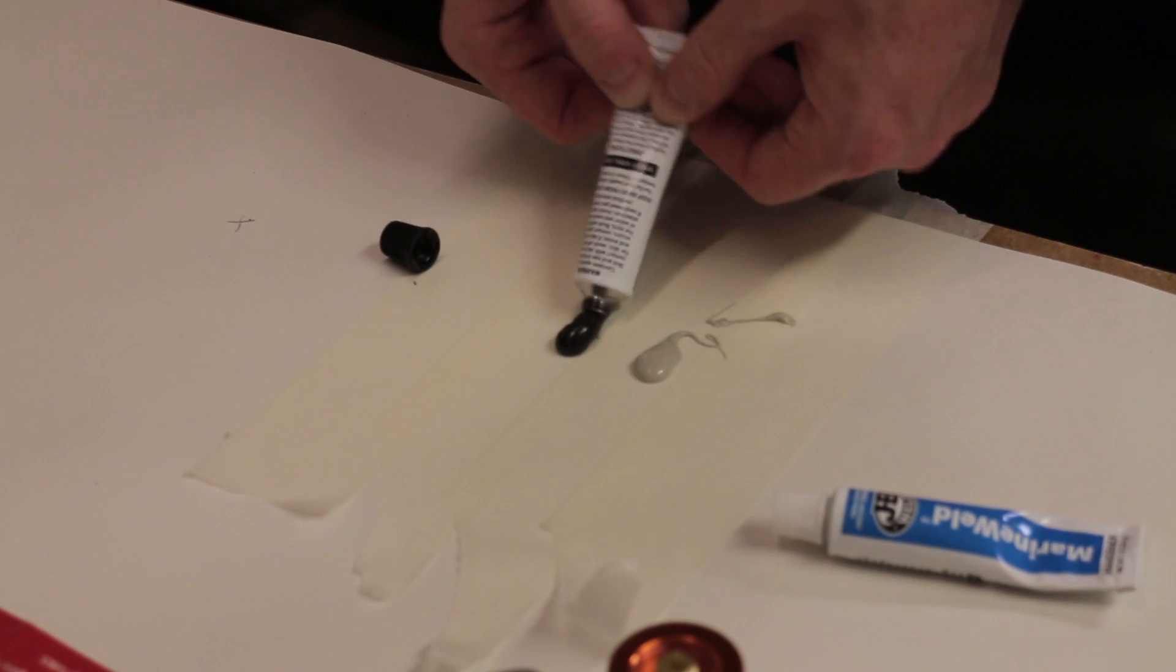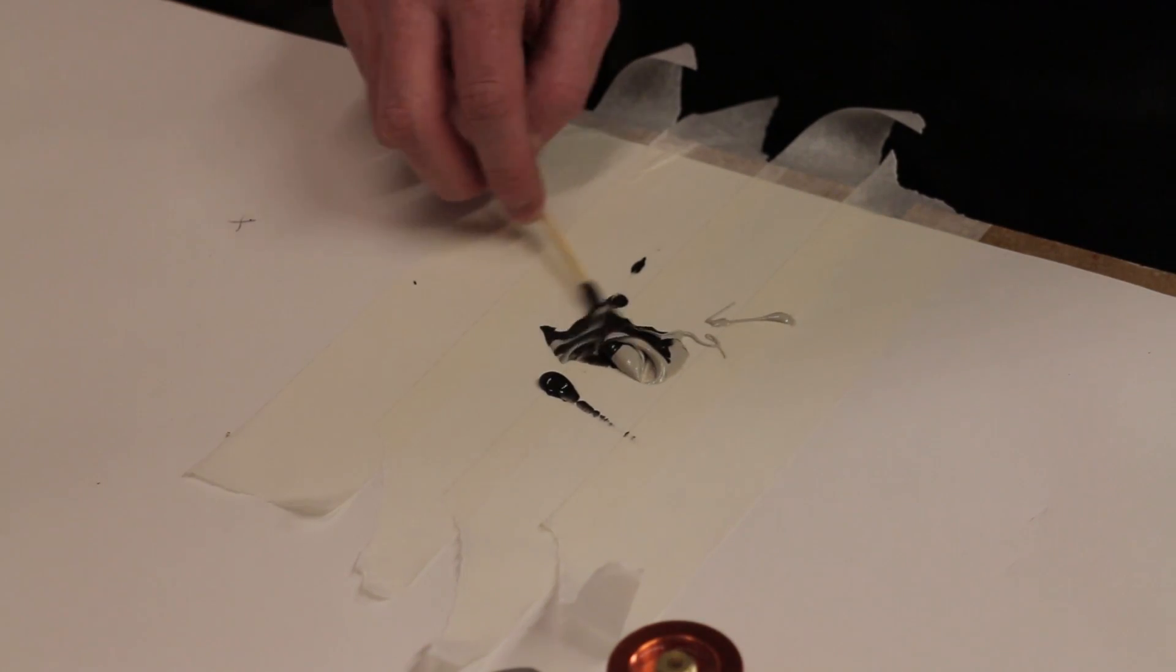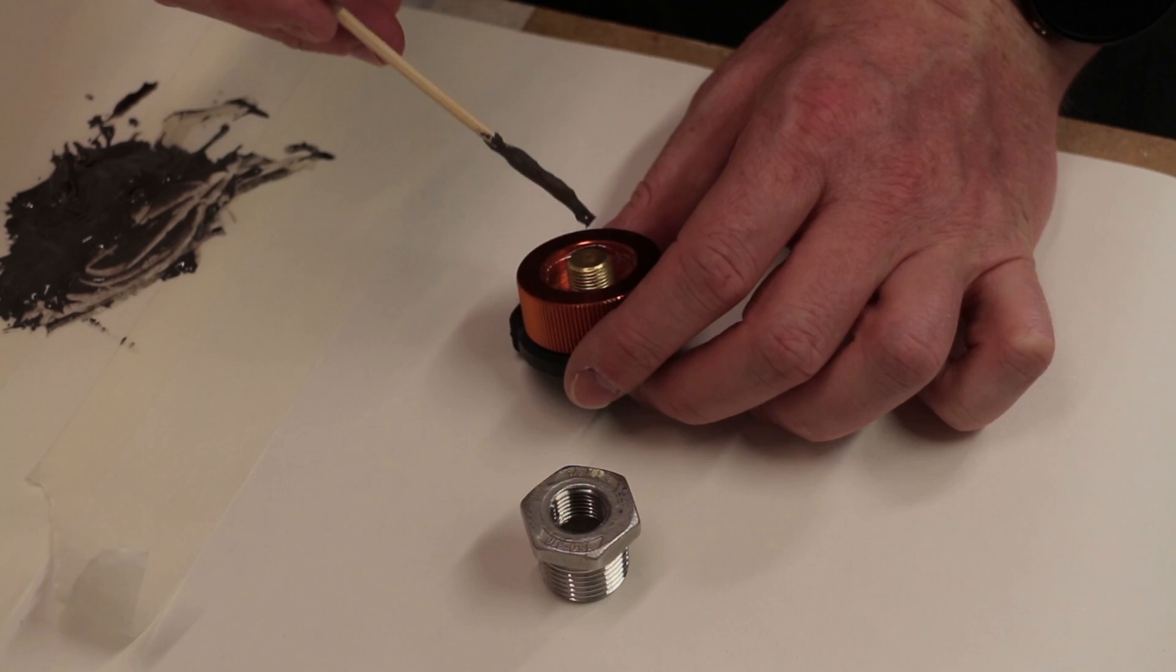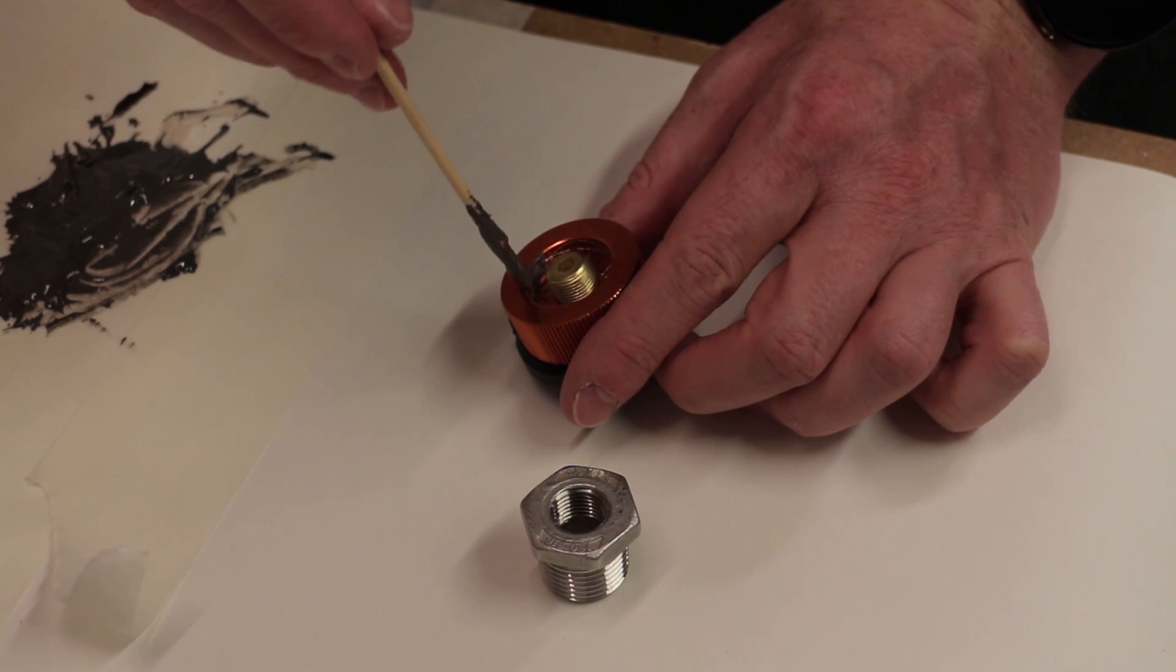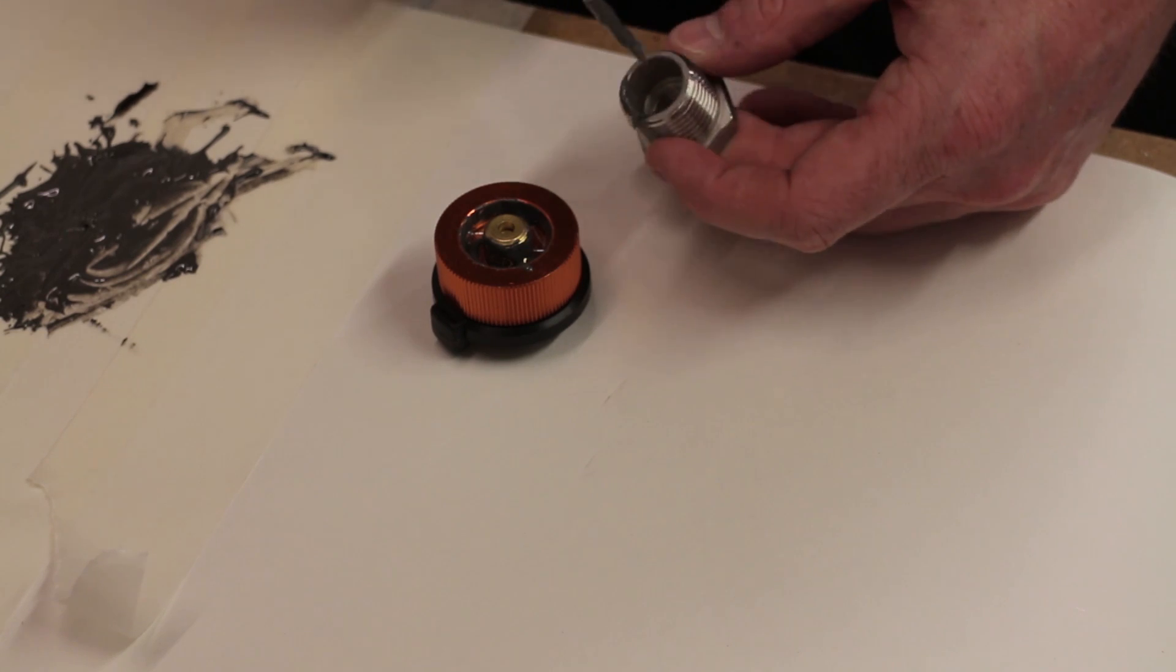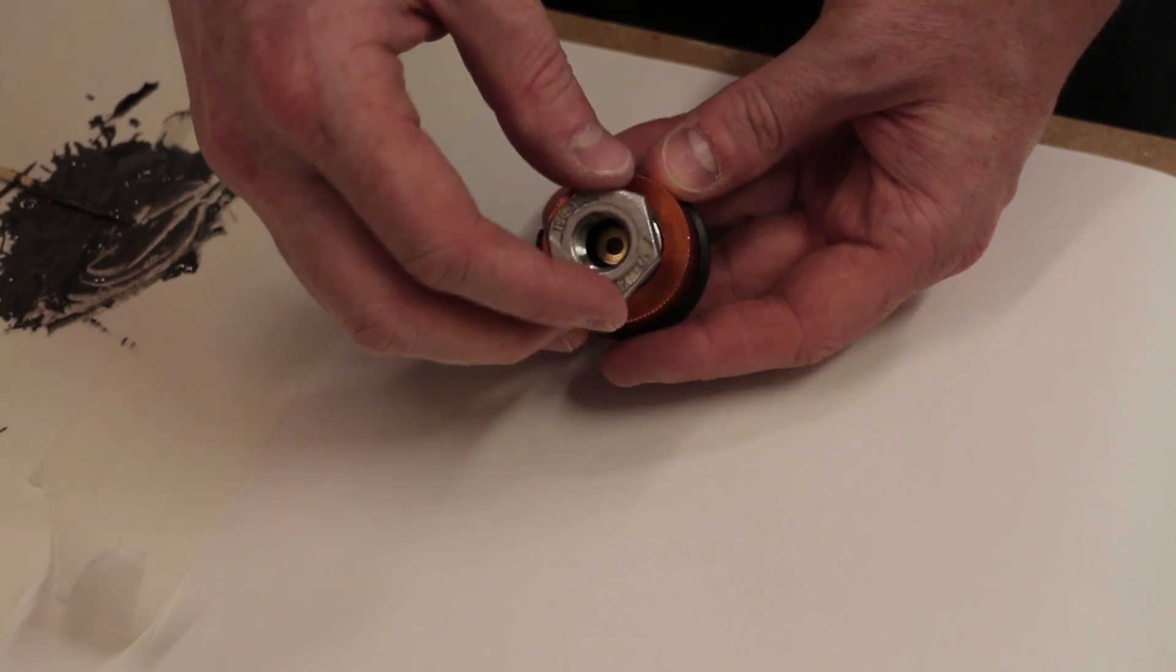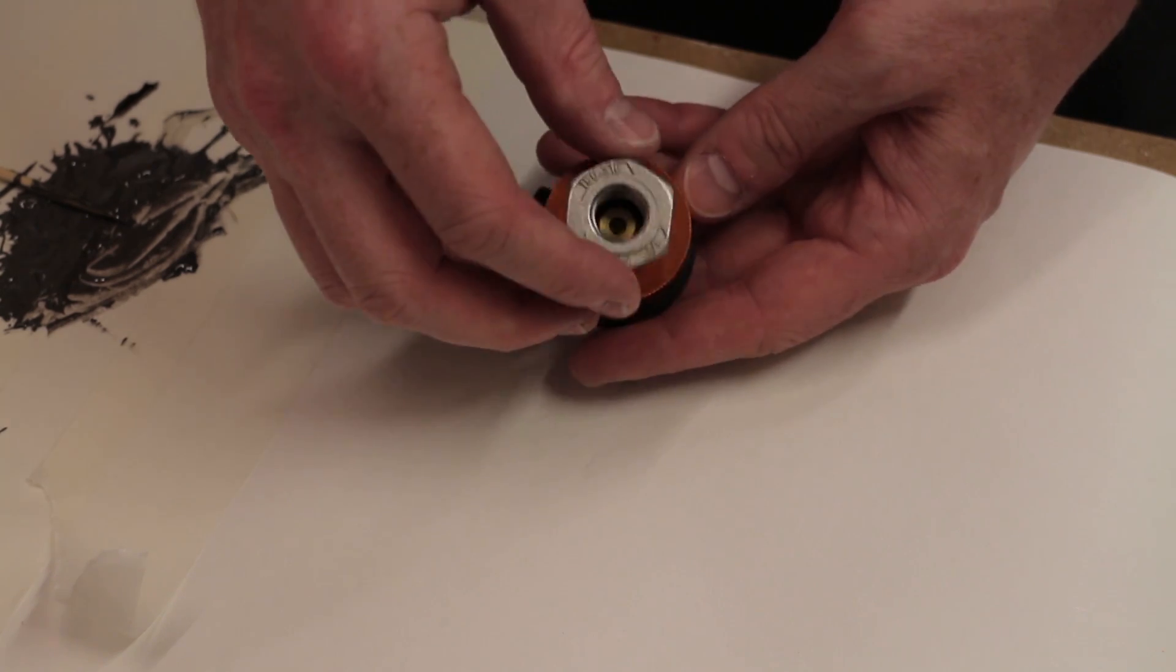The epoxy I'm using is called Marine Weld from JB Weld. I can't quite remember why I chose this one but it did seem to work pretty good. I carefully apply the epoxy to all the contact areas. It's possible to get a good contact to both sides of the thread adapter.